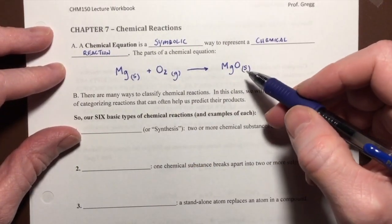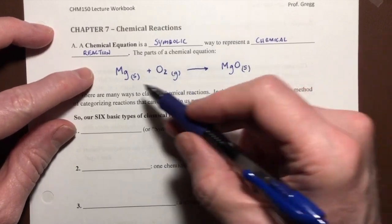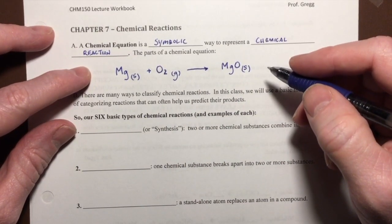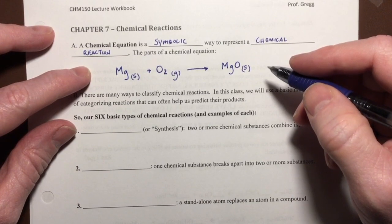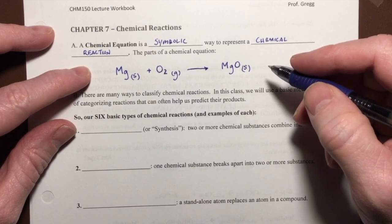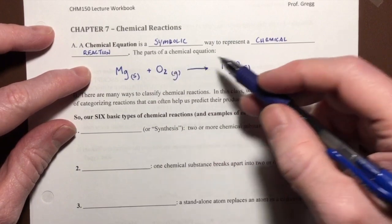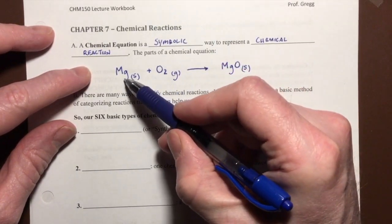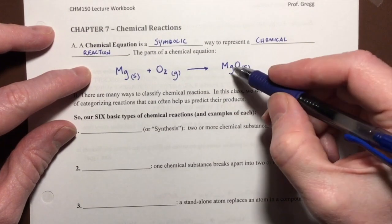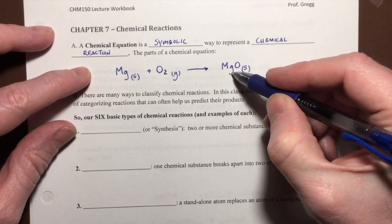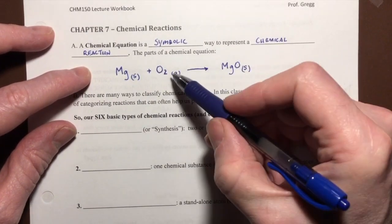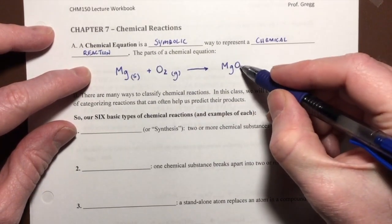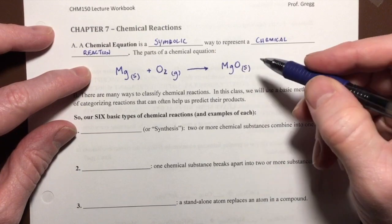Now I've written the chemical equation and to be complete, I want to balance it because the law of conservation of matter means we have to have every atom accounted for at the end. If we have one magnesium atom to begin with, we have to have one at the end. If we have two oxygen atoms at the beginning, we need two oxygen atoms at the end.